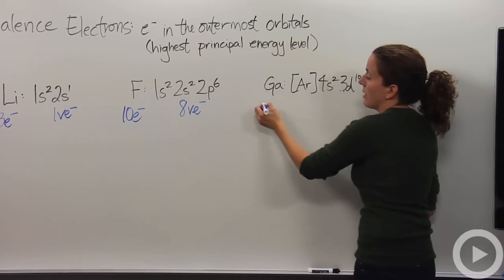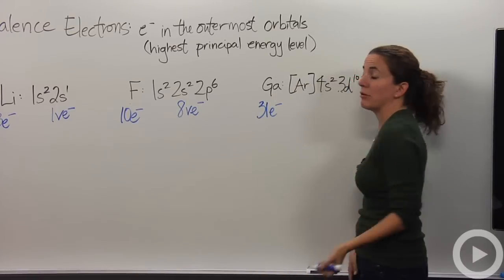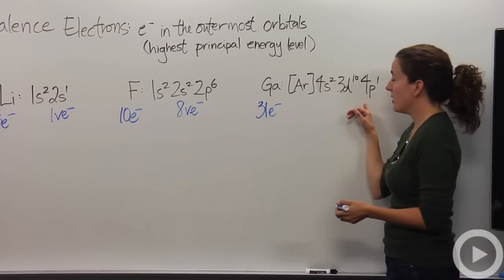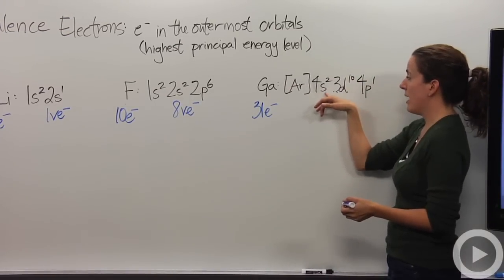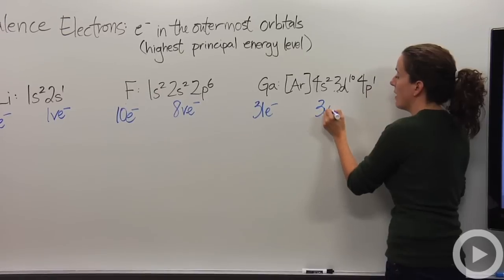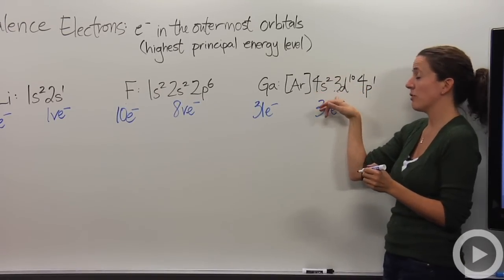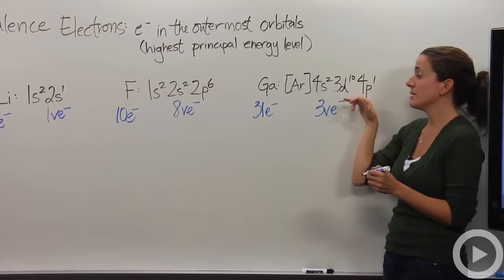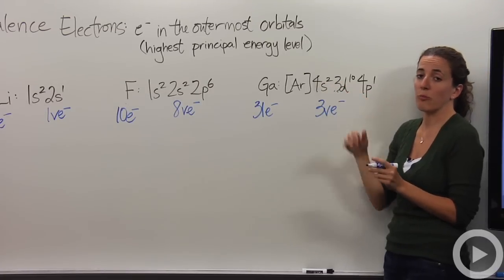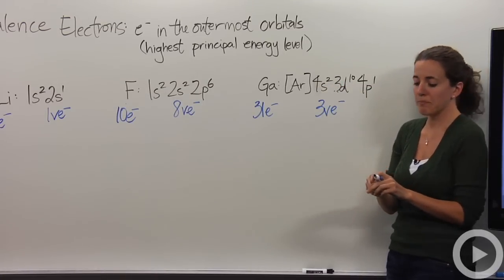Looking at gallium, gallium has thirty-one electrons total, but in the fourth principal energy level, it has a total of three valence electrons. Notice that it only has three, this D does not count because it's only the third principal energy level. The fourth is the highest, and we're only going to take the electrons in the fourth principal energy level. In this case, there's three of them.